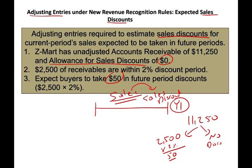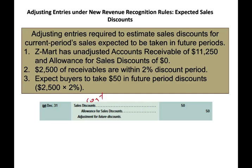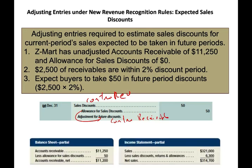We have to record an expected sales discount — the keyword is 'expected,' meaning it may or may not happen, but we have to be ready for it. We debit sales discount, which is a contra revenue, and credit allowance for sales discount, which is a contra receivable, reducing our receivable by $50. This entry, recorded on December 31st, proactively records the expected sales discount. When you receive sales discounts during the period you record them, but at year-end you also estimate how much discount you are still expecting to incur.